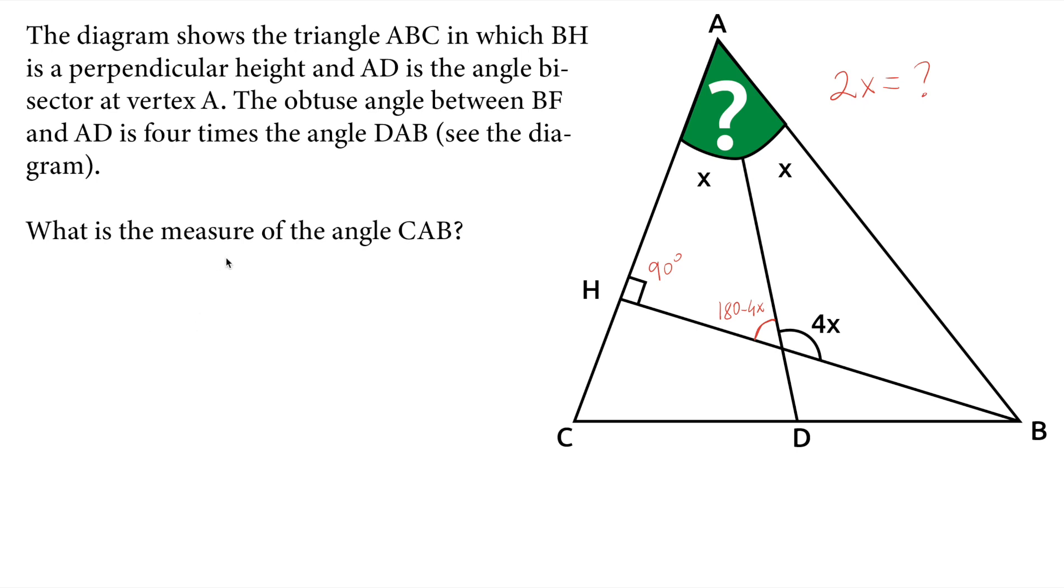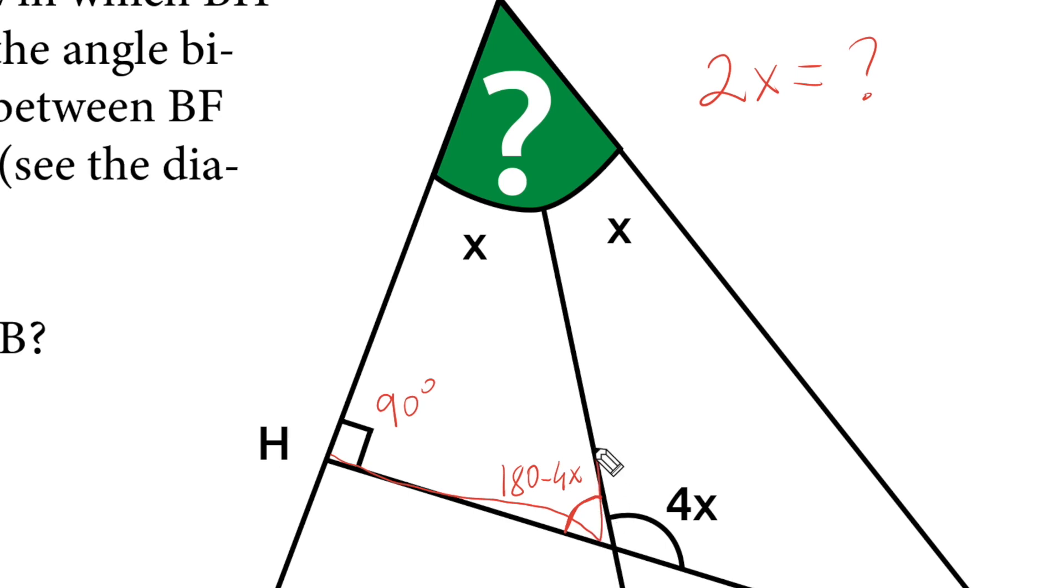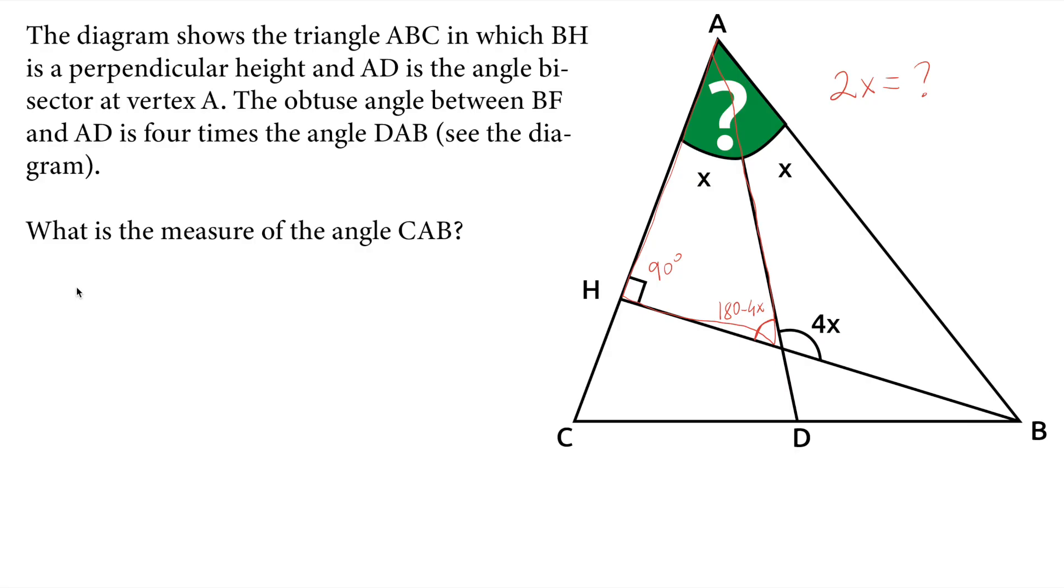We will use another concept that is triangle sum theorem. In this triangle right here, we have 3 angles. We don't know x and the other angle as well. So sum of these interior angles is equal to 180 according to triangle sum theorem.